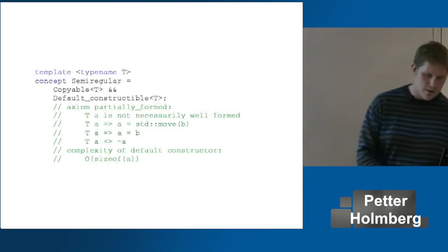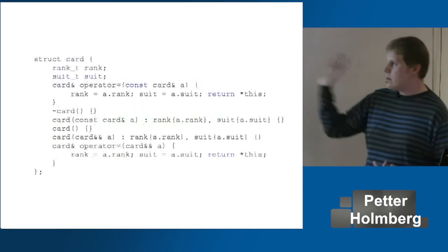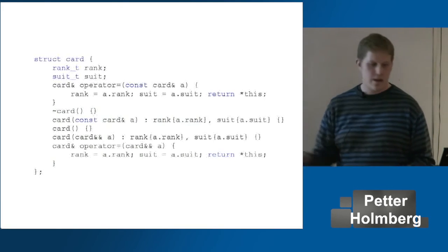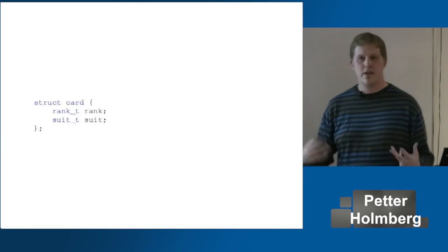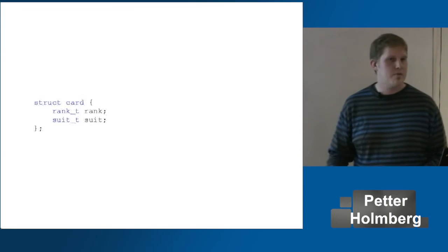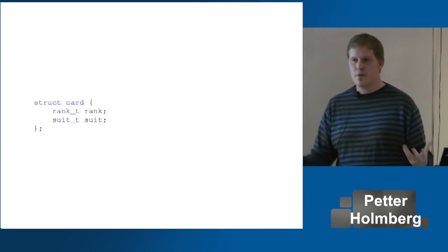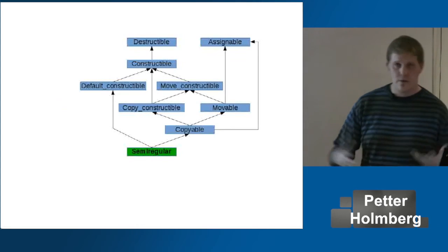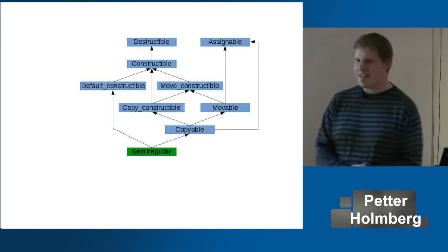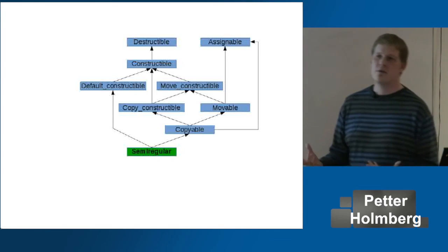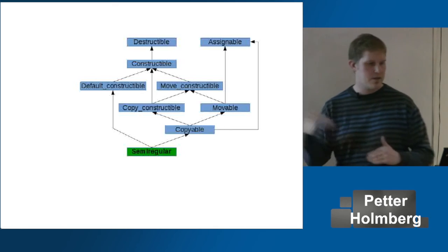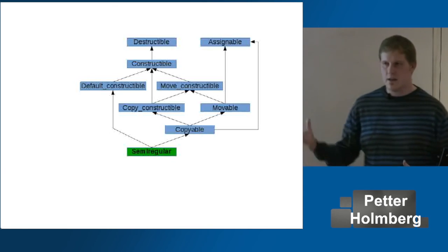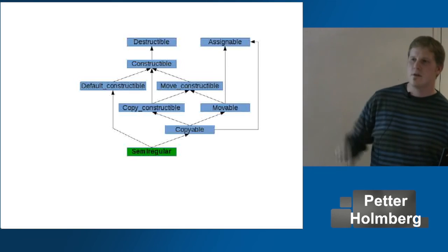It can be quite overwhelming when you look at all these details, so it can be helpful to illustrate it graphically and see how these concepts depend on each other. It's actually tightly connected and not that complicated — it's just a DAG that goes up to some simple concepts. And of course, the name 'semi-regular' implies that there's something missing. The most important parts are two more concepts: concepts of equality and of total ordering.